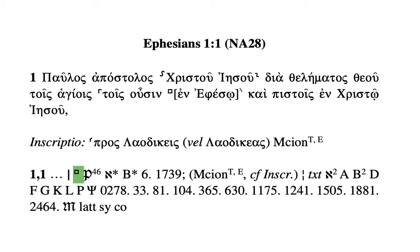The Nestle-Aland gives you the support for the omission first. The first thing to show up for the omission is P46, or Papyrus 46, a very early witness to the Pauline epistles. It lacks 'en Ephesō' — it goes right from 'tois ousin' to 'kai pistois.'